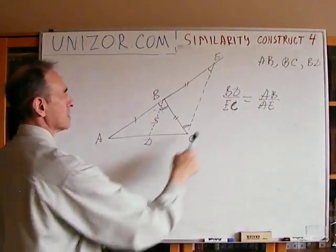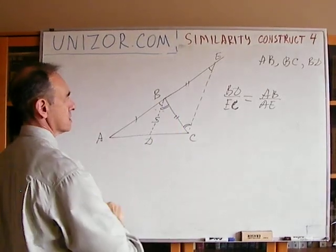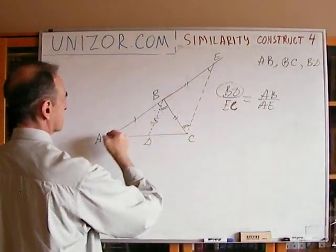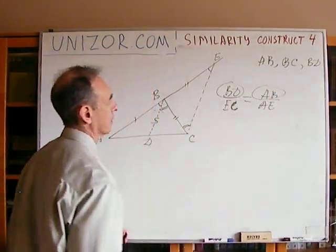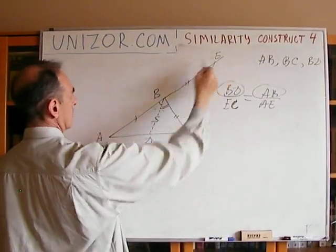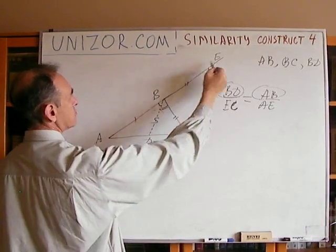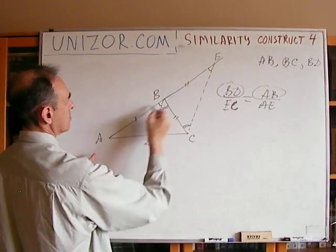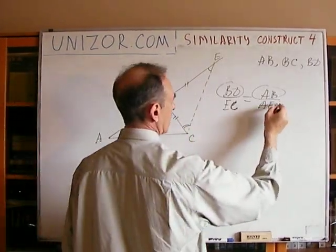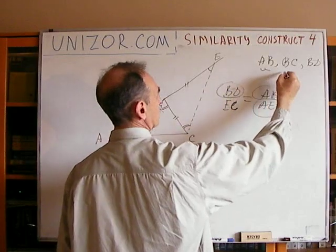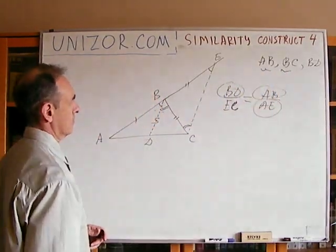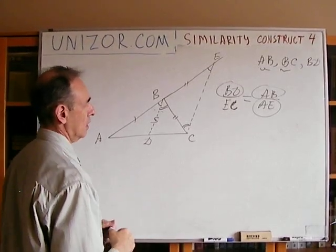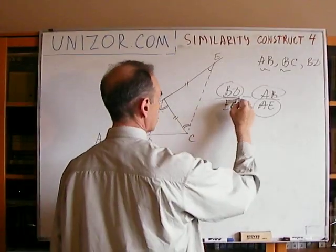What do we know in this proportion? BG is the given bisector. AB is a given side. AE is the sum AB plus BE, but BE equals BC, so AE equals AB plus BC — which we know. So we know three elements of this proportion and can find the fourth, EC.